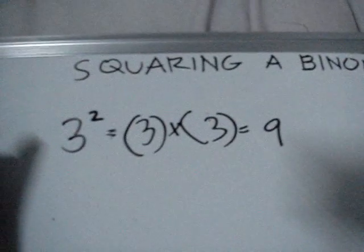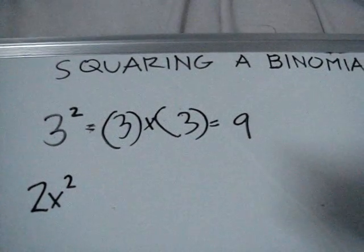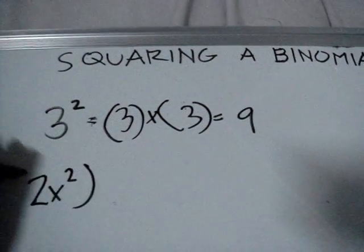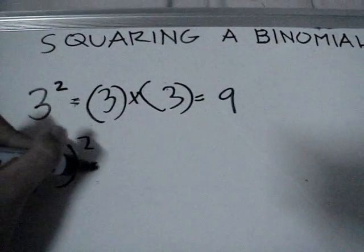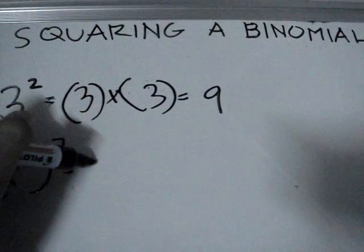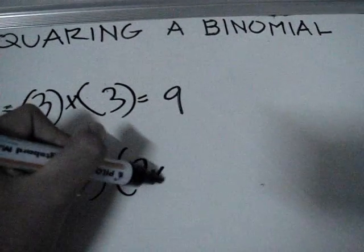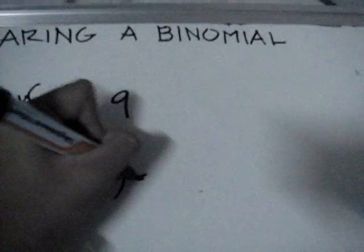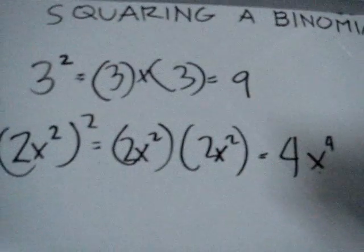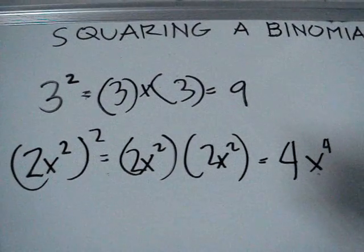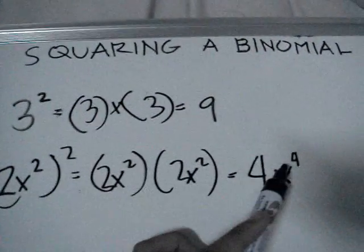Let's take the expression 2x squared. Squaring 2x squared is simply multiplying 2x squared by itself, so 2x squared multiplied by 2x squared equals 4x to the power of 4. Remember, by the law of exponents, when the bases are the same you add the exponents — so 2 plus 2 is equal to 4.